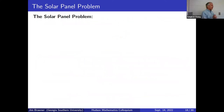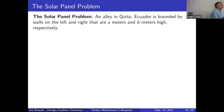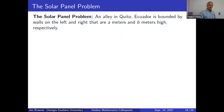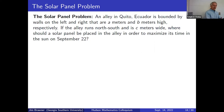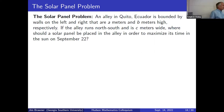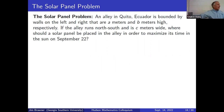Now let's talk about solar panels — my second favorite angle optimization problem. Suppose you have an alley in Quito, Ecuador, bounded by walls on the left and right that are A meters and B meters high respectively, running north–south, and C meters wide. Where should a solar panel be placed in the alley to maximize its time in the sun on September 22nd? The reason for Quito: it's on the equator, and September 22nd is the fall equinox, so the sun rises due east and sets due west.